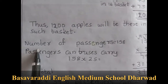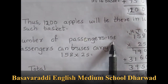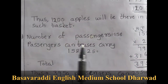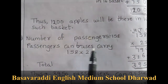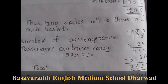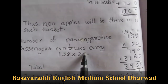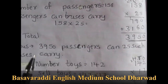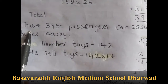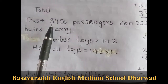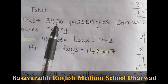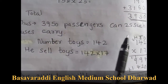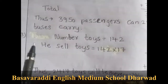Second one: Number of passengers a bus can carry is 158. For 25 such buses, you multiply 158 into 25. Thus 3950 passengers can 25 such buses carry.